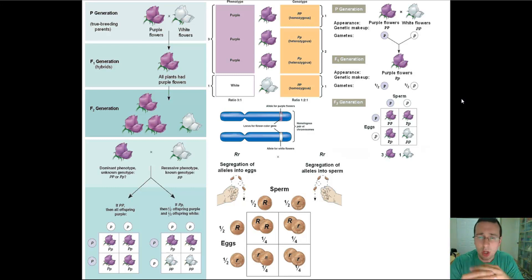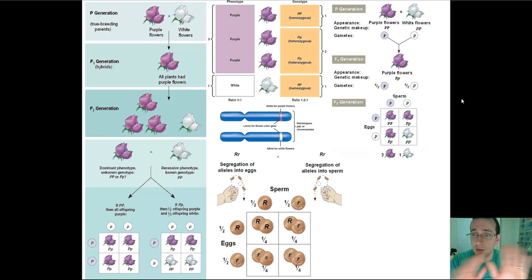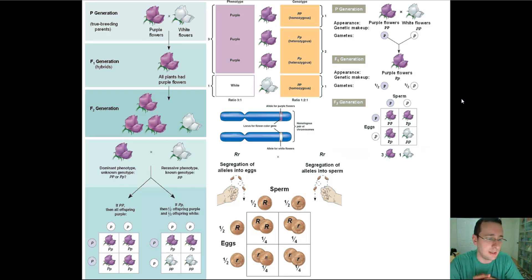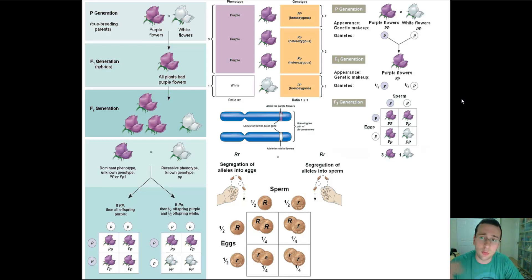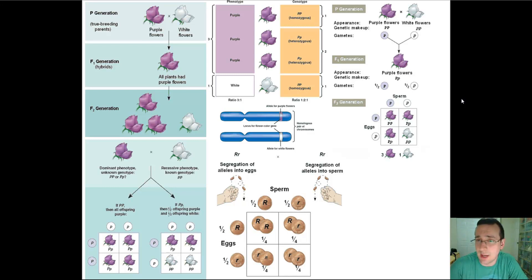It all has to do with creating alleles and separating them during the formation of gametes, which we now understand is tied to meiosis I and the separation of homologues. Punnett squares can help us determine the probability of events. For example, whenever two hybrids collide, there's only a 25% chance of having a child with the recessive trait.